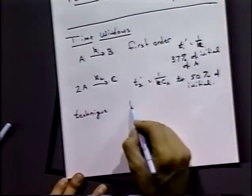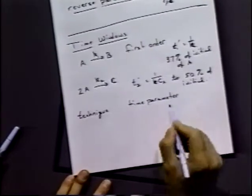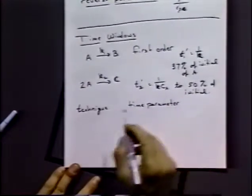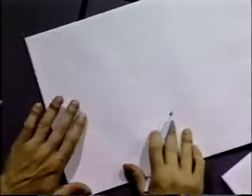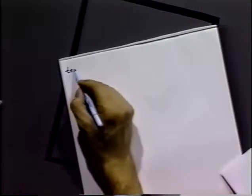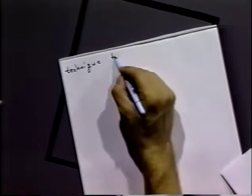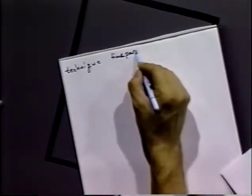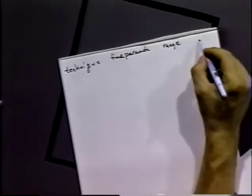How can we judge the time scale of our experiment? It depends on the technique. And there's a table in the book about this. So let me write this. So technique, time parameter, the range, and the window.